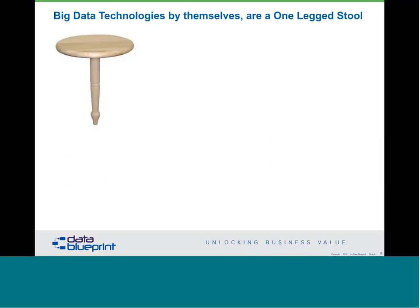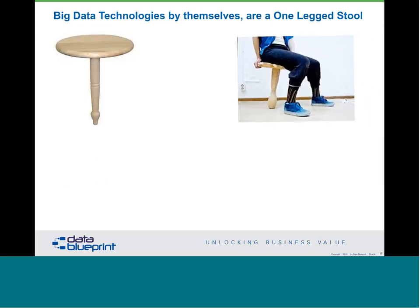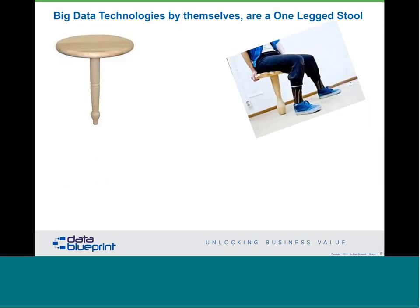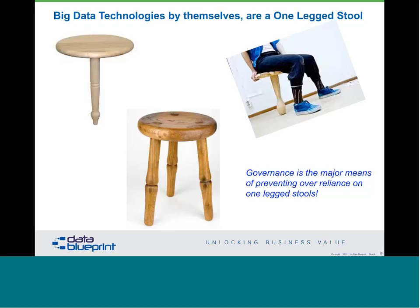Watch how that conversation changes when you use the phrase 'big data techniques' instead of 'big data' — in our estimation it becomes much more productive. Big data technologies by themselves are a one-legged stool. We like to think of a proper three-legged stool as being comprised of people, process, and technologies. Governance is the major means of preventing over-reliance on these one-legged tools and allowing us to have a proper balance as we approach relatively new problems with new techniques.